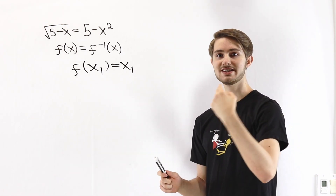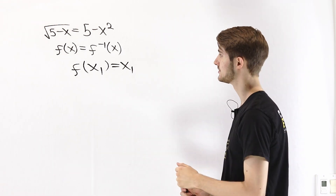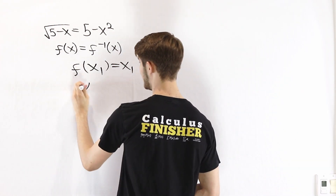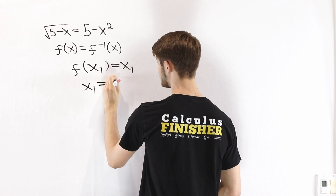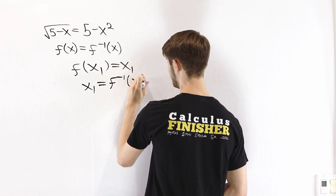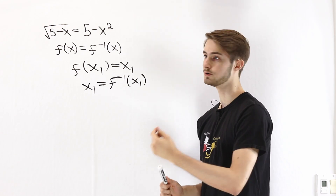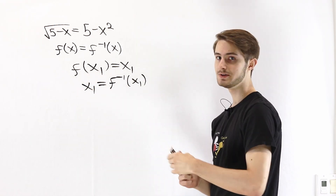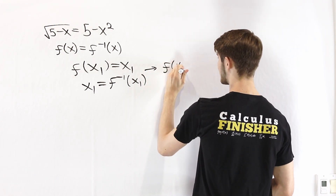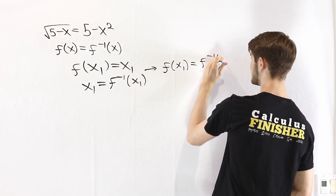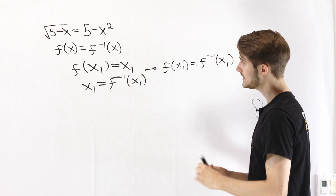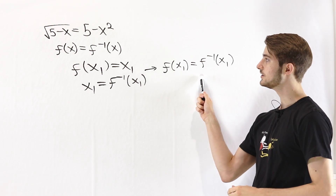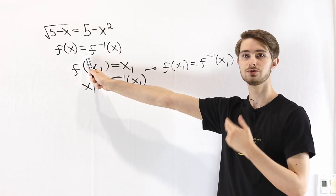We can take the inverse of f on both sides. On the left, f inverse of f just gives us the input back, so we have x1, and on the right we have f inverse of x1. So x1 equals both f of x1 and f inverse of x1, which means by the transitive property, f of x1 equals f inverse of x1. So any fixed point immediately gives us a solution to our equation.